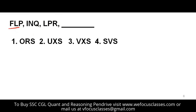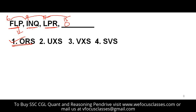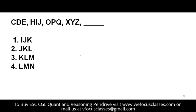The next problem is FLP, INQ, LPR — a combination of three letters. Look at the first letters: F is 6, I is 9, L is 12 — difference of 3 each time. So 12 plus 3 = 15, which is O. Middle letters: L is 12, N is 14, P is 16 — next is 18, which is R. Last letters: P, Q, R — next is S. So the answer is ORS.